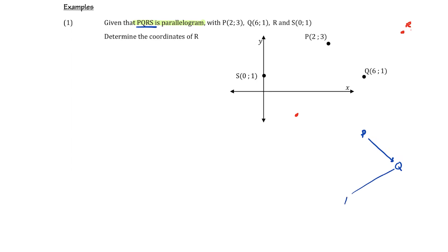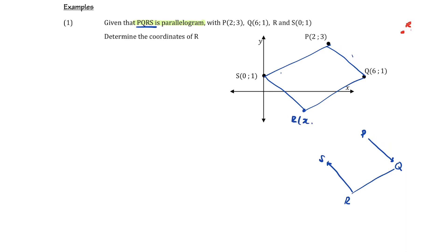So if we go P, Q, then R must be the next vertex to follow before ending back at S to complete the quadrilateral. Now we know it's a parallelogram, so the diagonals of this shape will share a midpoint. From knowing what S and Q are, we can find the midpoint of SQ.